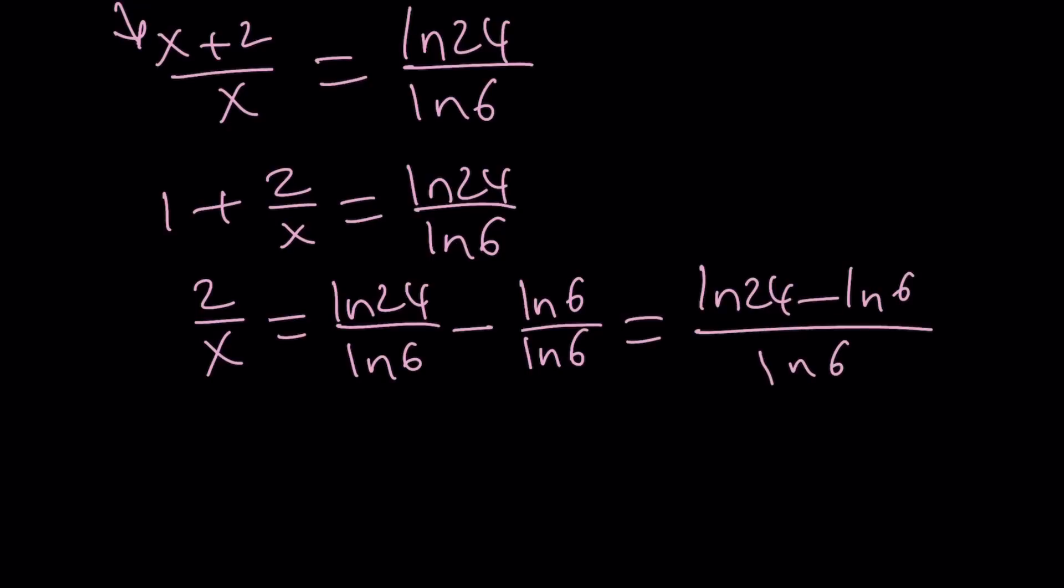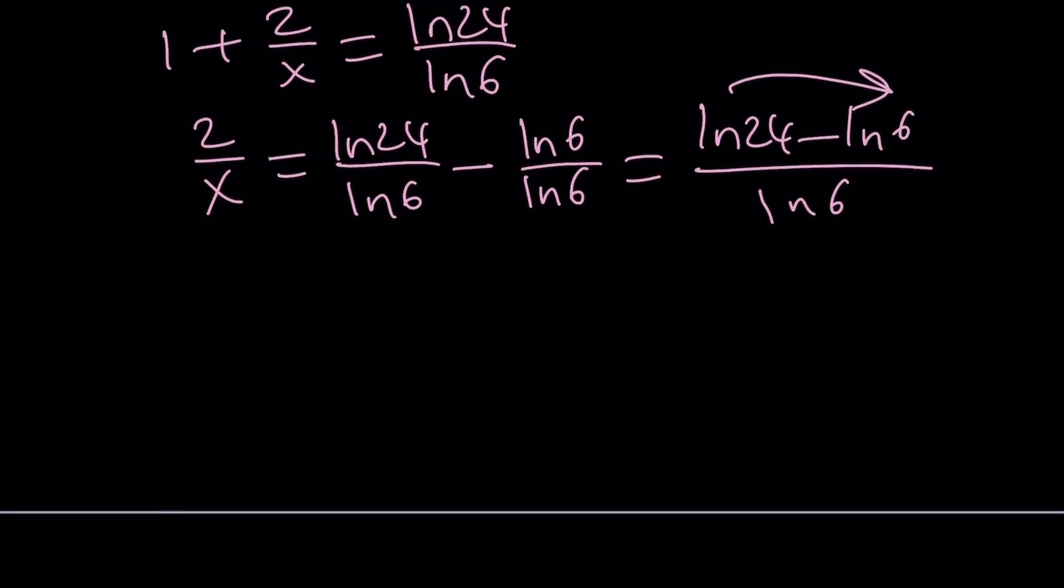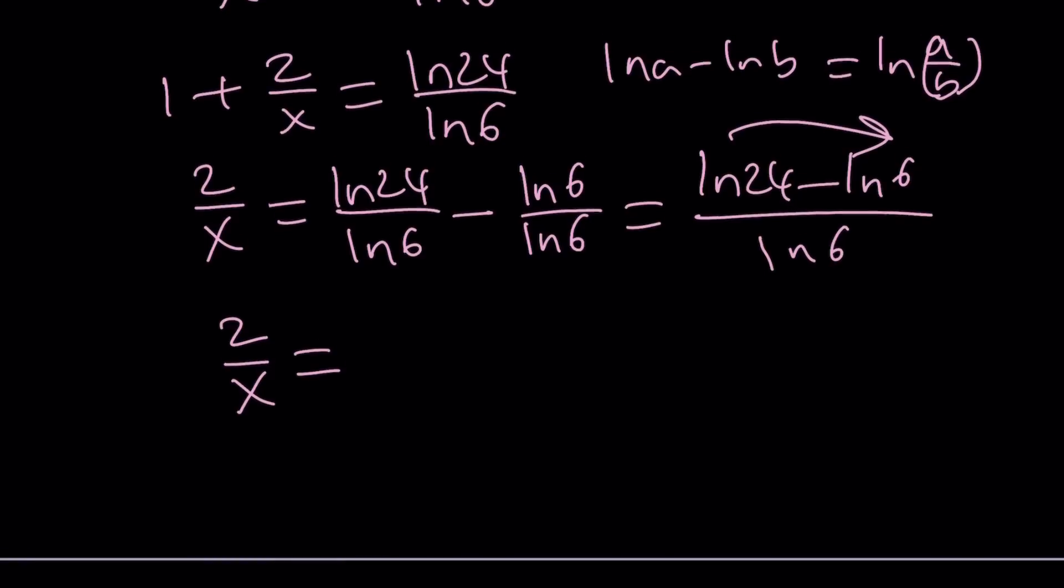So I try to simplify as much as possible, but I have the difference of two logs, which can be written as log of a quotient. Remember the property? ln A minus ln B is the same as ln A over B. Of course, A and B have to be positive, and B shouldn't be 0.